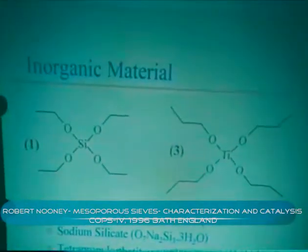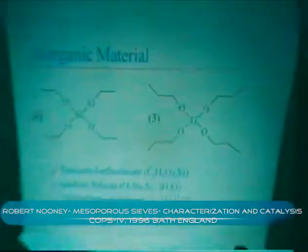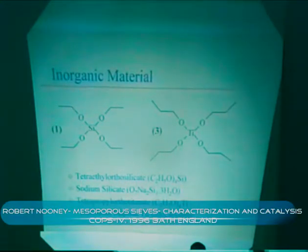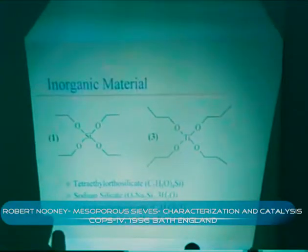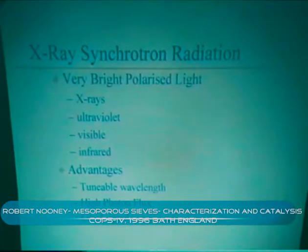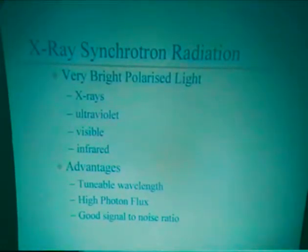In our work, we have used tetraethylorthosilicate (TEOS) and sodium silicate as silica sources. We've also doped the samples with titanium at 1% and also aluminium sulfate hexadecahydrate, also added at 1%, to look at the effects of these. We did some X-ray analysis using synchrotron radiation at the Daresbury Laboratory — basically very bright polarized light from the X-ray region to the infrared — with advantages of tunable wavelength, high photon flux, and good signal-to-noise ratio. You can also take in-situ experiments, but we're not going to show those here.